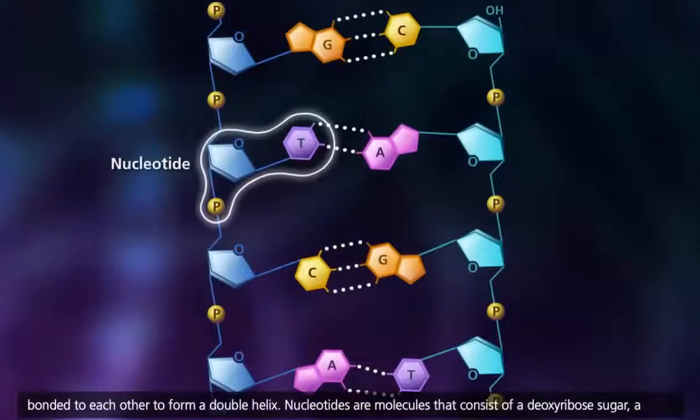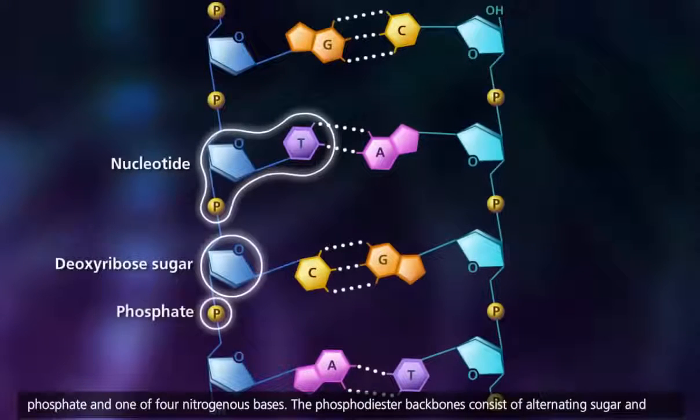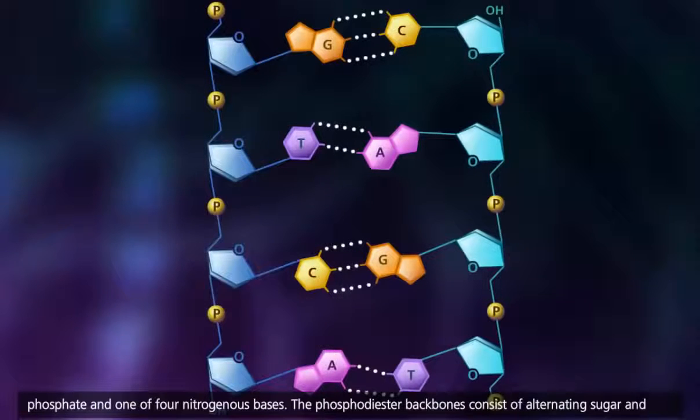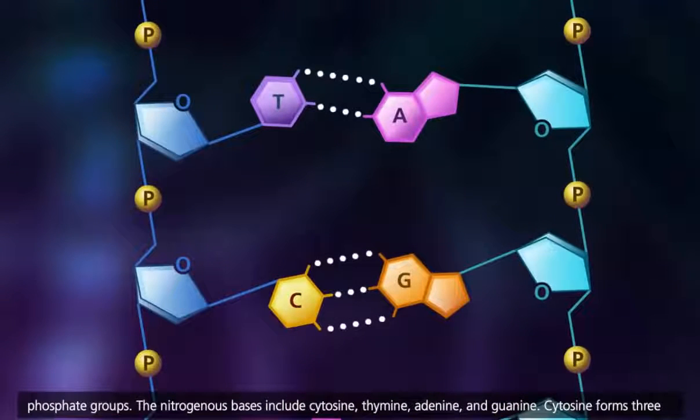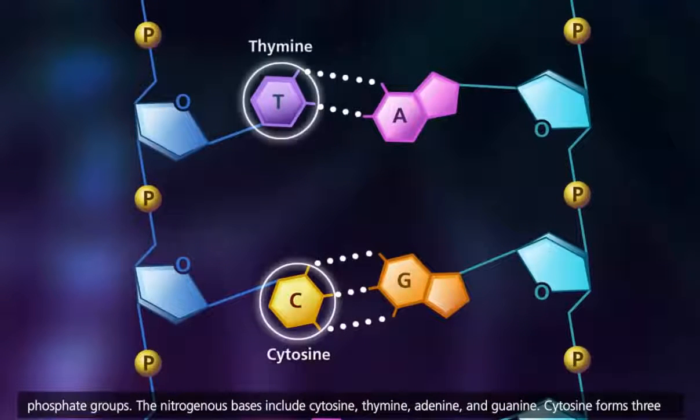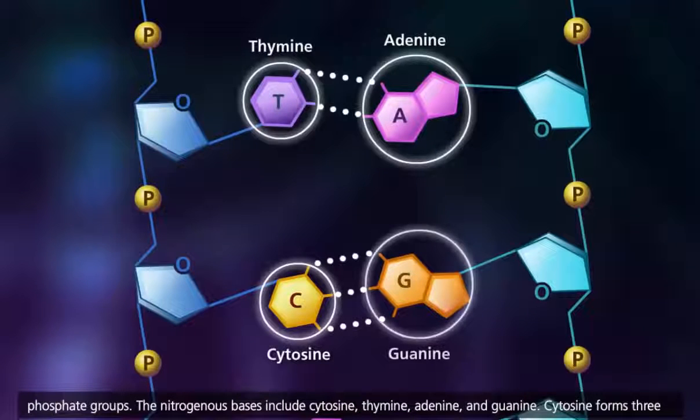Nucleotides are molecules that consist of a deoxyribose sugar, a phosphate, and one of four nitrogenous bases. The phosphodiester backbones consist of alternating sugar and phosphate groups. The nitrogenous bases include cytosine, thymine, adenine, and guanine.